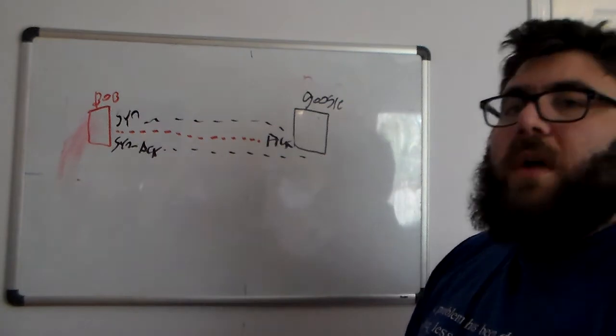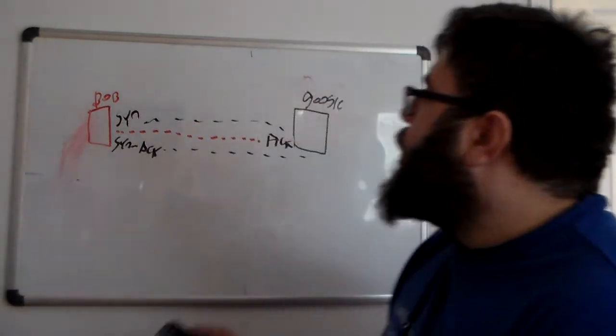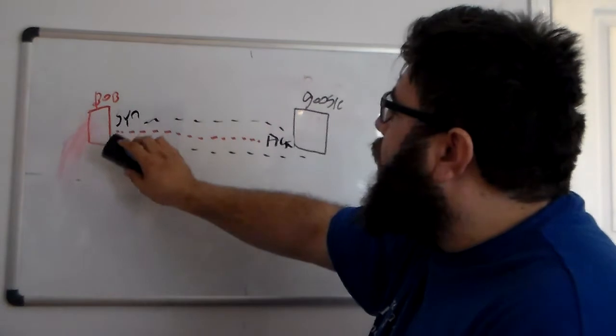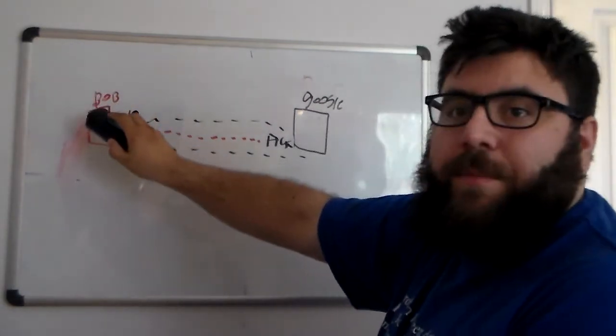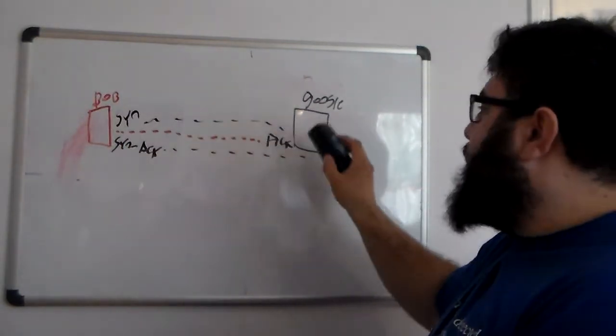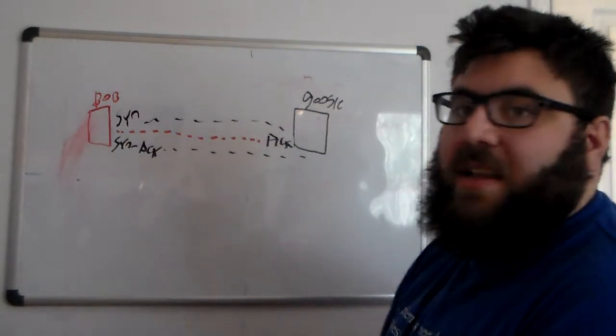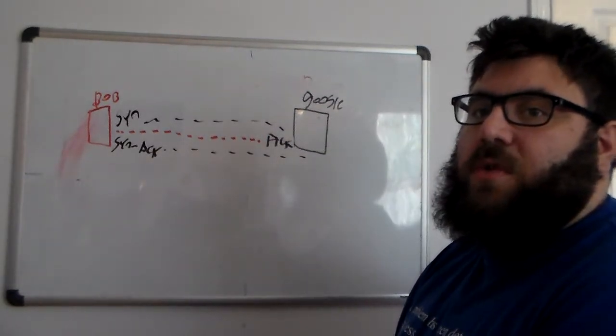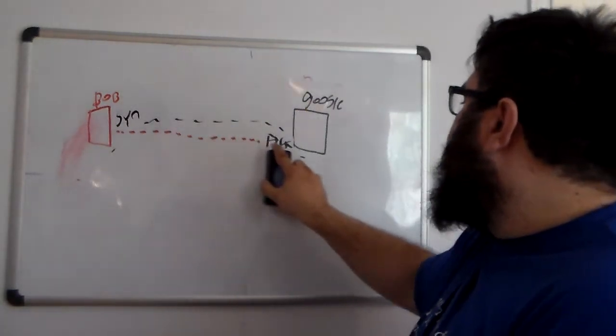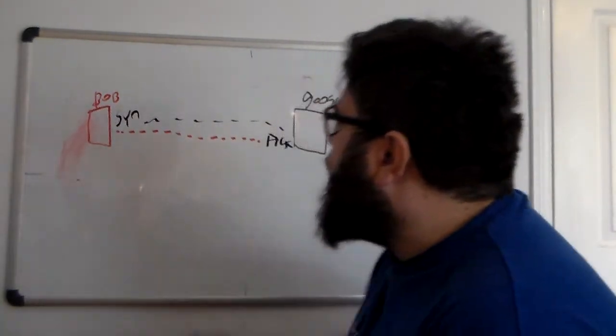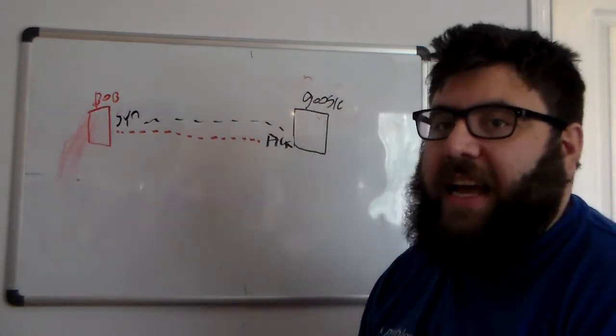So what happens in a SIN attack? Well, a SIN attack will go like this. Bob sends SINs to Google. Google sends the ACK to the client. However, the client does not respond with the SIN ACK.